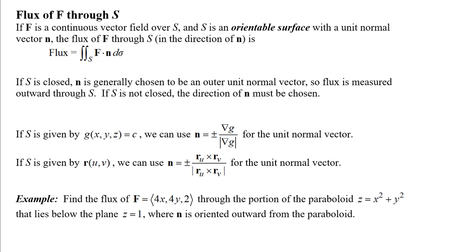We need a continuous vector field over S. S is supposed to be an orientable surface — we'll talk about that in a minute — with a unit normal vector N. The flux of F through S in the direction of N is given by this surface integral.